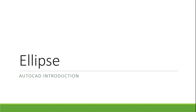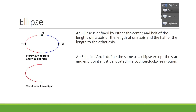An ellipse is kind of a flattened circle. It's going to be defined by its diameter — from one end to the other — and then by a radius, or it can be defined by two radiuses. You can define it by its center and give it one point and then another point at the top, or define it by its whole axis and then another endpoint. You can also create an elliptical arc if you just want a partial curved elliptical shape.